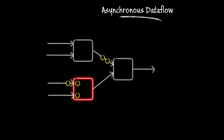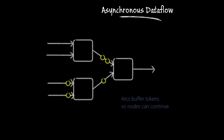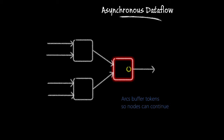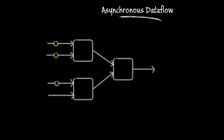The ARCs connecting nodes are often, but not always, designed to buffer multiple tokens. They act as a first in, first out queue. If nodes had to wait for their output ARCs to empty before they could process the next set of inputs, the whole system would run slower and possibly deadlock. Let's watch the flow one more time.